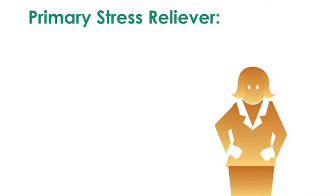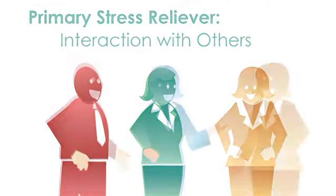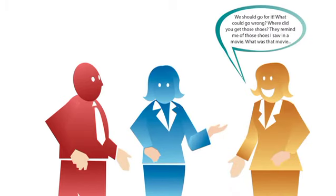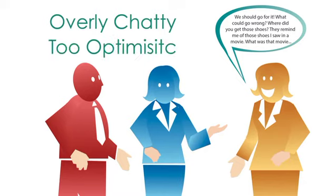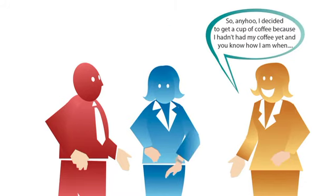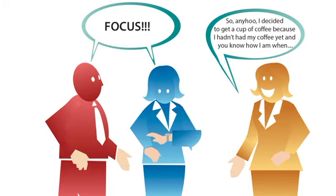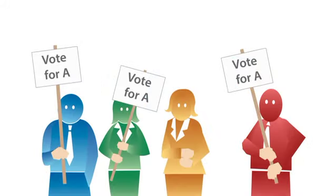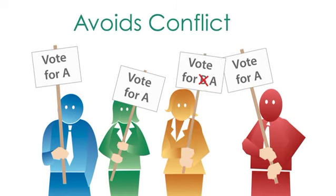The high-I's primary stress reliever is interaction with others. When things become stressful, an I can turn from sociable and overly chatty and become too optimistic. If you are under a tight deadline, you may need to remind a high-I to stay focused on the tasks at hand as they may have challenges with time management. They can also be over-promotional under stress. An I may have a tendency to abandon their position in order to avoid conflict as they want to be liked above everything else.